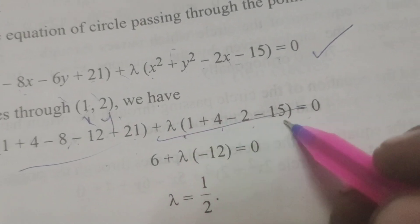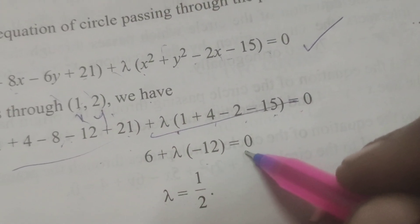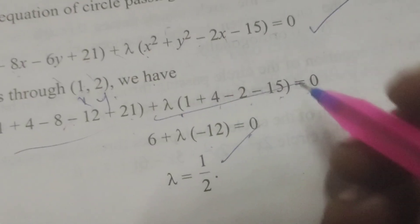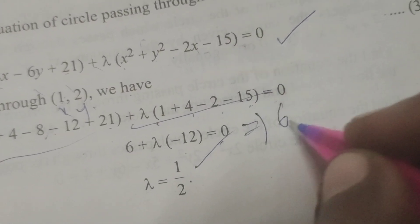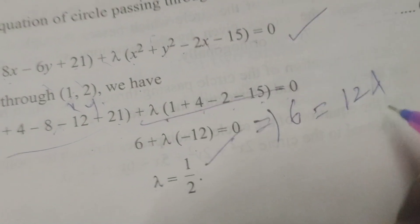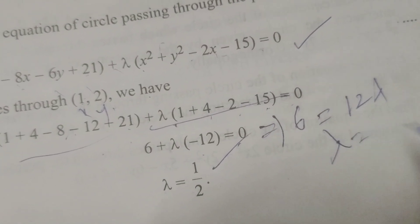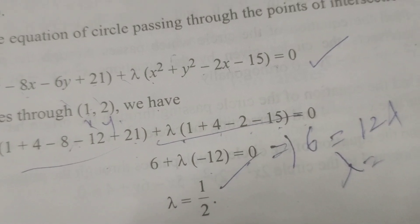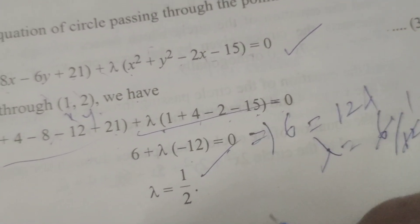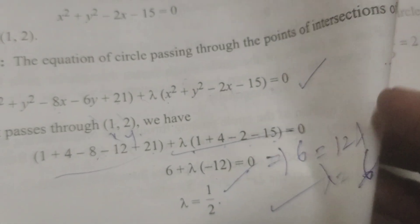Solving for λ: 6 + 12λ = 0, so λ = -6/12. Wait, that gives λ = 6/12 = 1/2.